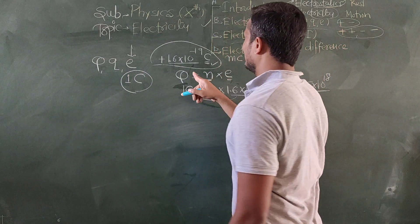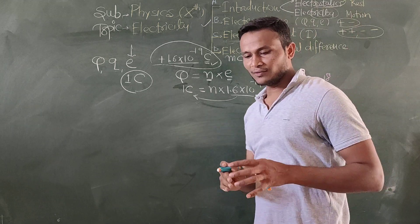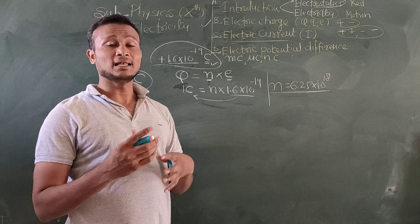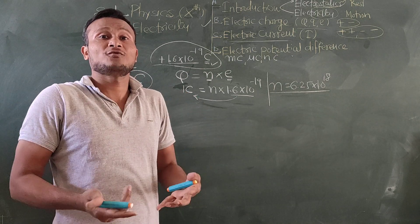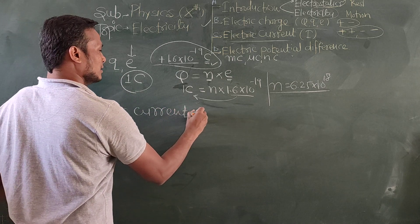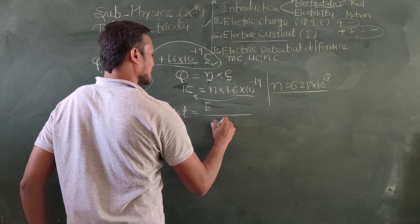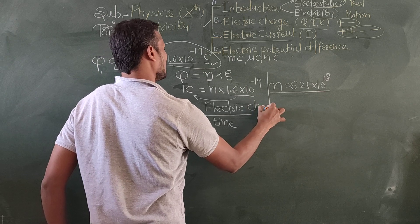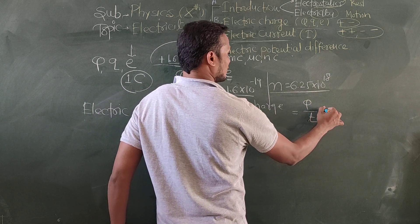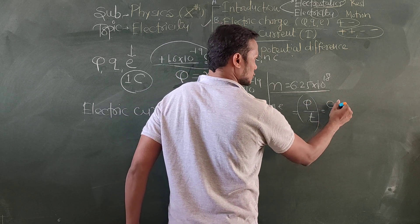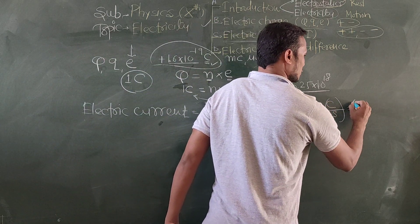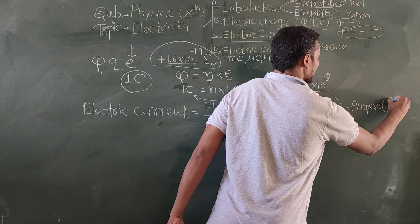Now, electric current. When charge flows, it forms a current and we call it electric current. Electric current refers to the flow or rate of flow of electric charge. The symbol for electric current is I, and its SI unit is Coulomb per second, which is also popularly known as Ampere, with the short form A.